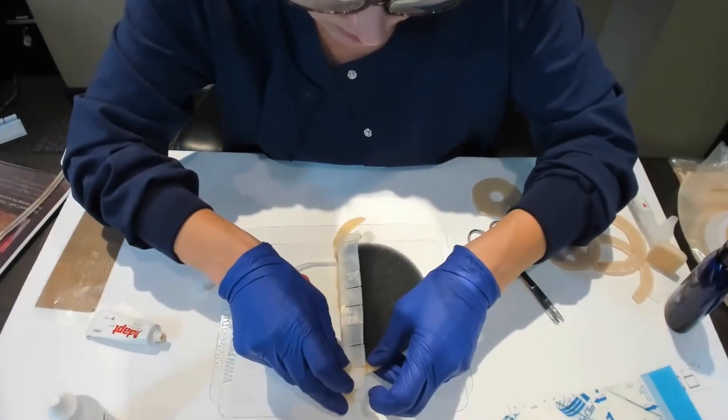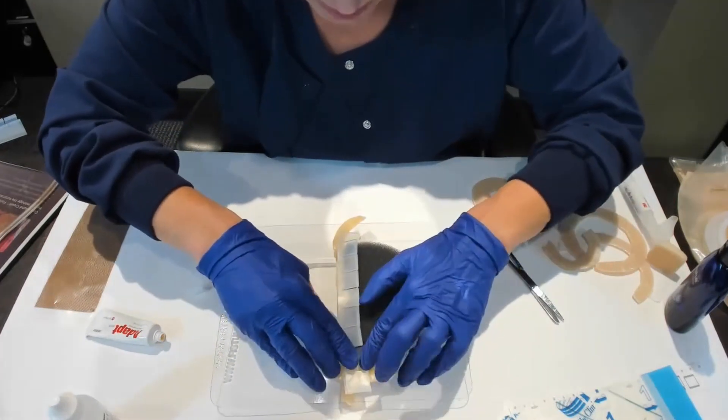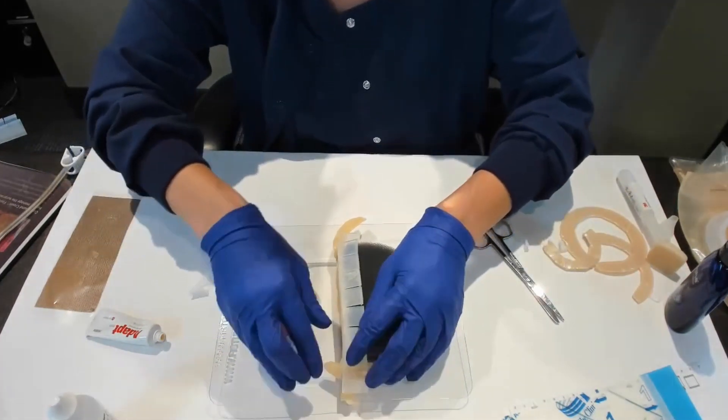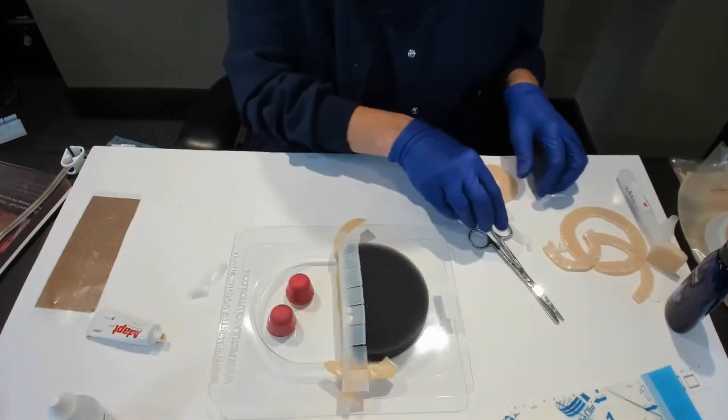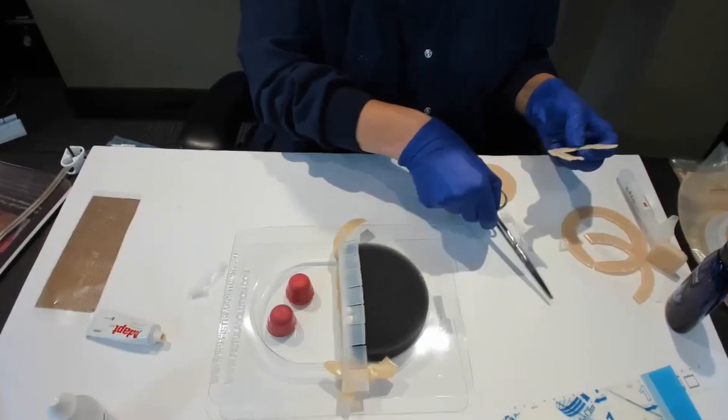Before I even put the strip down, I might want to add a piece of this to the skin edge just so I have a really good landing zone for tray man.